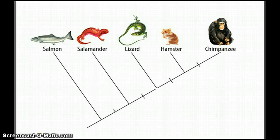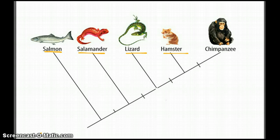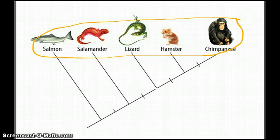This cladogram shows salmon, salamander, lizards, hamsters, and chimpanzees. At the top of a cladogram, you will always have the names of the organisms.